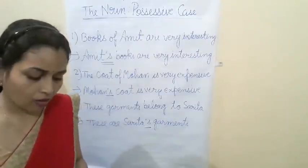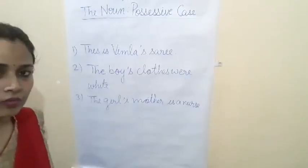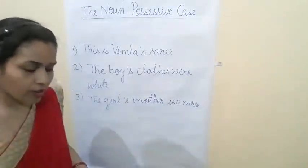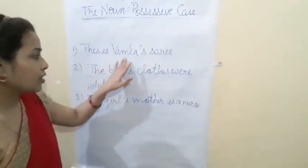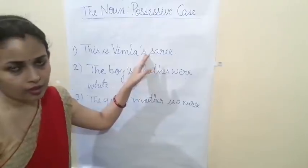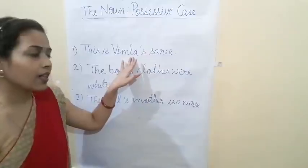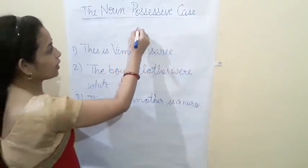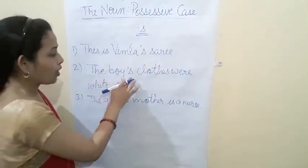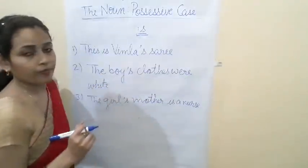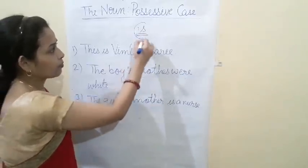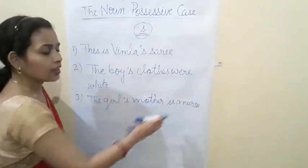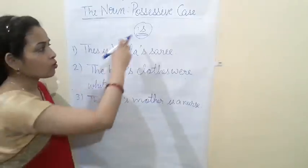Now we are going to study the formation of possessive form of singular nouns. The rule is: we add apostrophe sign with S. For example, 'Vimla's saree' — we put apostrophe sign with S. 'The boy's clothes were white' — again apostrophe sign with S. 'The girl's mother is a nurse' — same rule for singular formation, apostrophe sign with S.